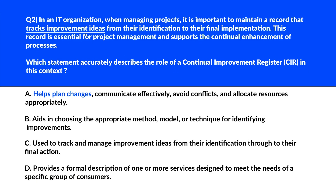This next question is about what tracks improvement ideas. Option A says it helps plan changes, communicate effectively, avoid conflicts, and allocate resources appropriately. This describes a tool for change management and resource allocation, but it doesn't specifically focus on managing improvement ideas and tracking their progress — therefore incorrect.